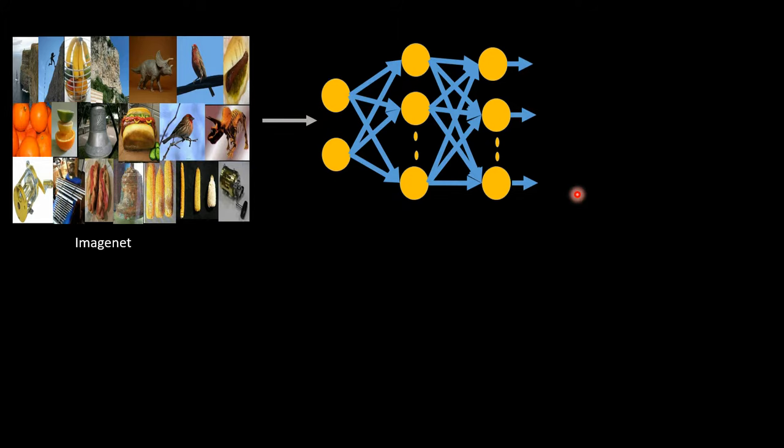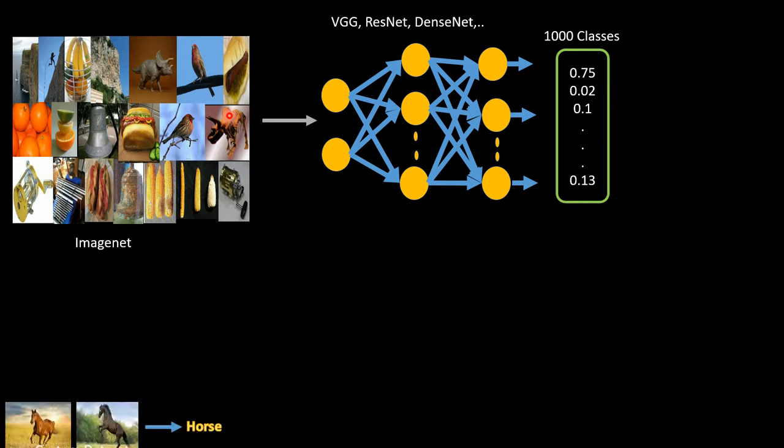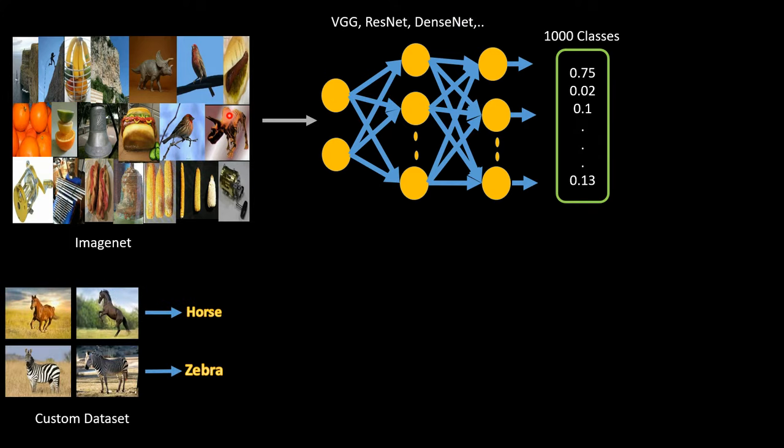What happens in transfer learning is you have, say, the ImageNet dataset, which is a huge dataset. You train a model on that for classifying, say, a thousand classes, and it could be any model: VGG, ResNet, DenseNet. A new problem comes to you, say a custom dataset where you have to classify horse versus zebra.